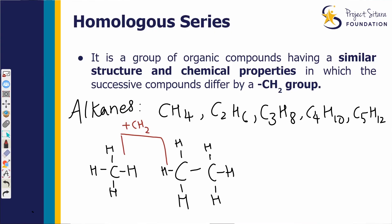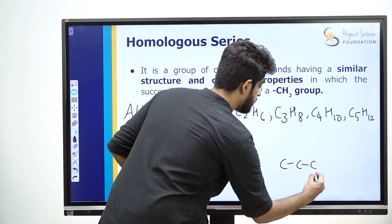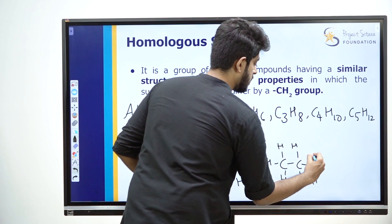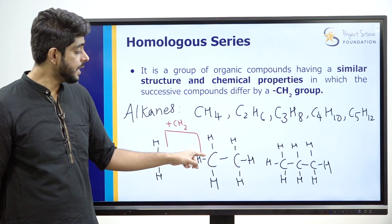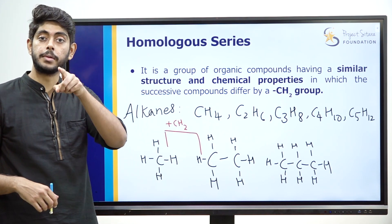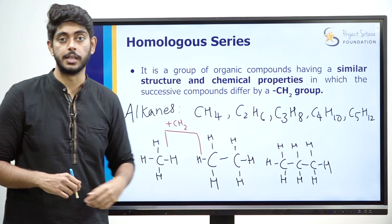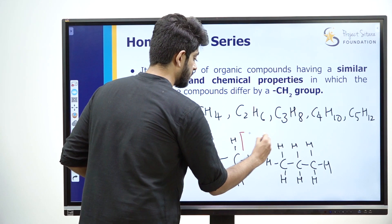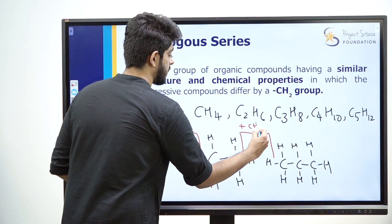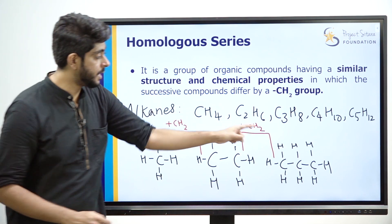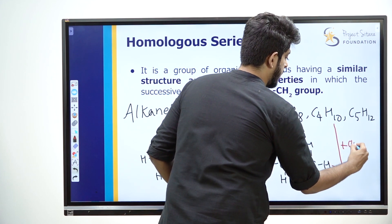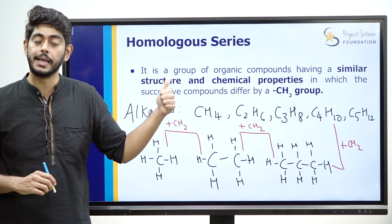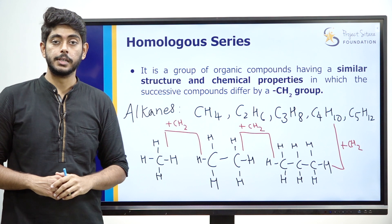Similarly, write the structure of propane. Ethane has two carbon atoms, propane has three — one extra carbon atom. Hydrogen also increases. So when we add one CH2 group to ethane, we get propane. Add CH2 to propane, we get butane. Add CH2 to butane, we get pentane. This is why successive compounds differ by a CH2 group. The general formula for alkanes is CnH2n+2.